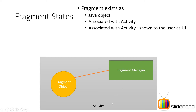In the second state, the fragment object gets associated with the fragment manager, or you can say the activity. This is when the onAttach method inside the fragment's lifecycle is executed, and the fragment is aware of the activity's existence — it gets a reference to the activity's context. But at this point, the fragment may or may not be seen by the user.